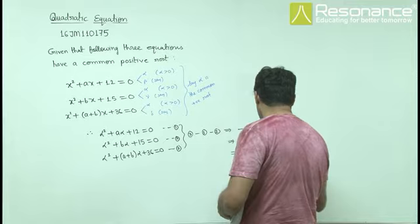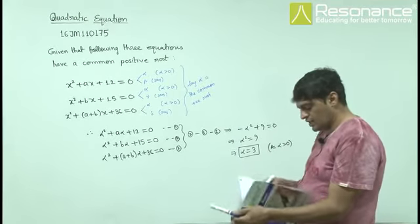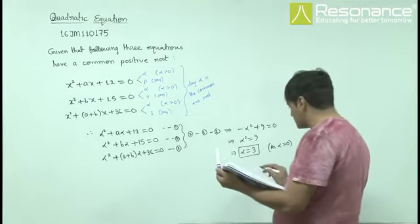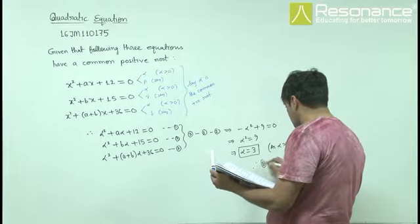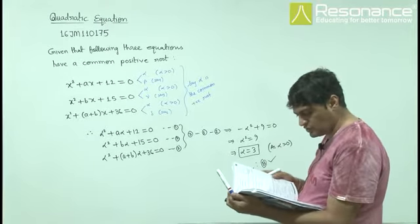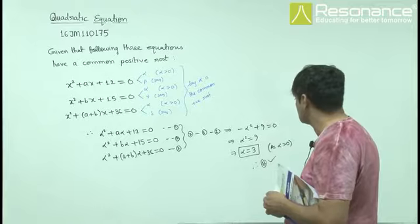Since alpha is positive, we won't take -3, so α = 3. This means option b is correct: the common positive root is 3. Since this is multiple choice, we have to check the other options also.